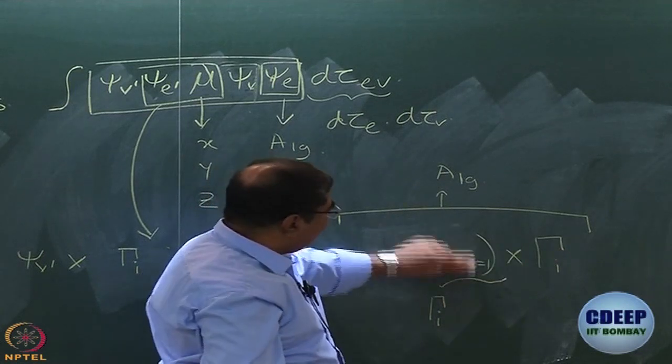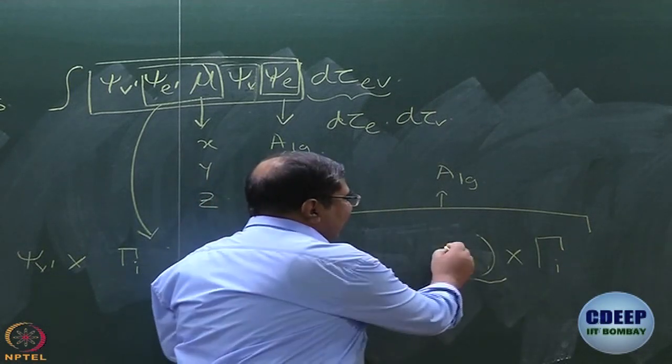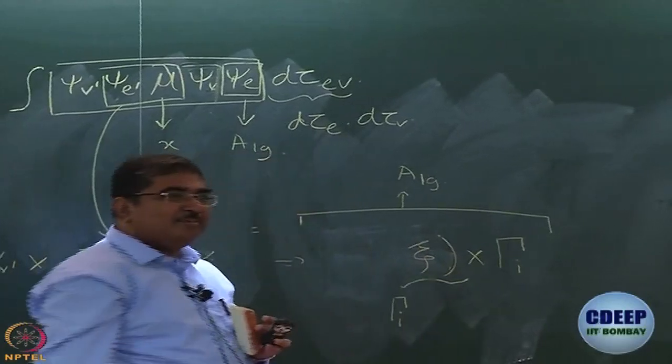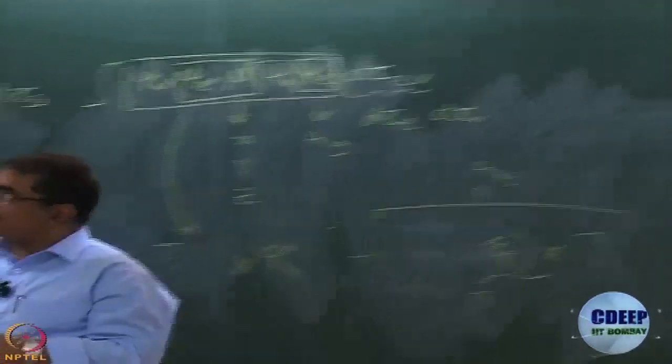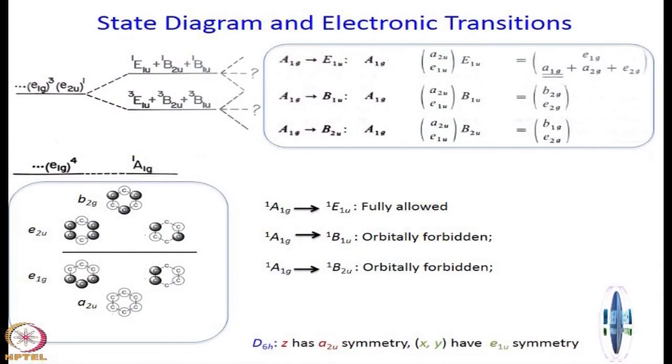I can simplify this discussion a little further. Since one of them is A1G anyway, all I have to say is Psi V equal to 1 should have the same symmetry as gamma I. And that has the same symmetry as the normal mode itself. So the way to look at it is this, from the orbital part only, you generate the direct product. If it contains A1G like it does in the first case, then fine, it is orbitally allowed. We don't have to worry about it anymore.